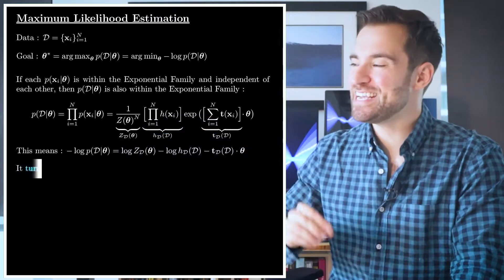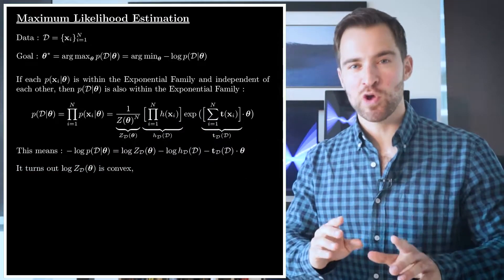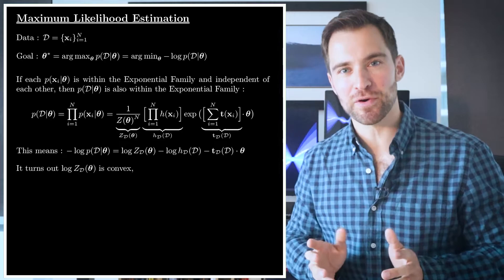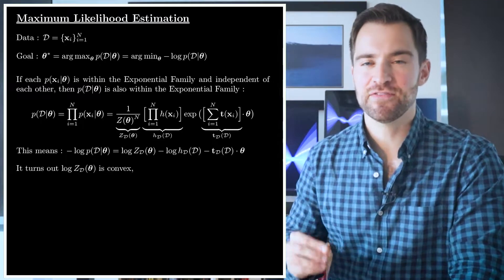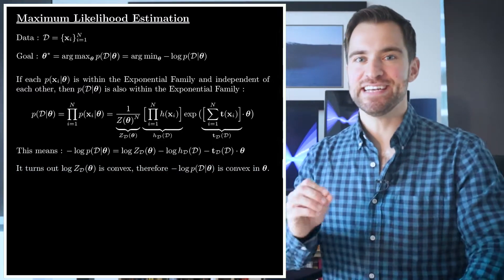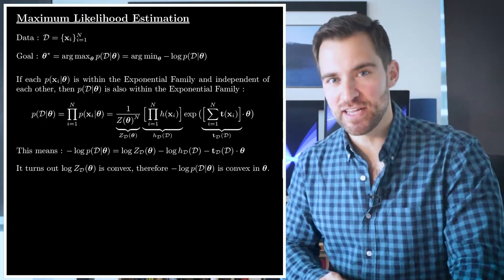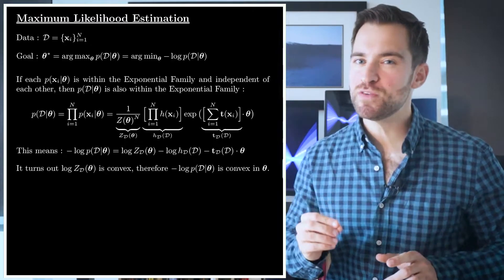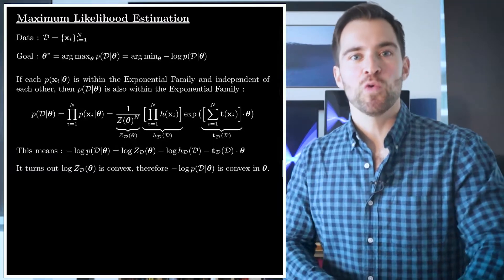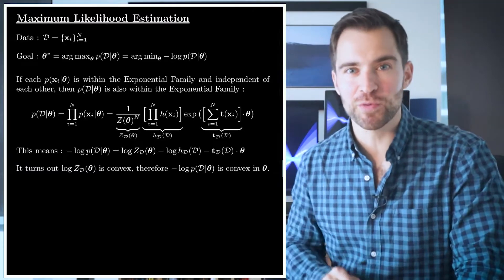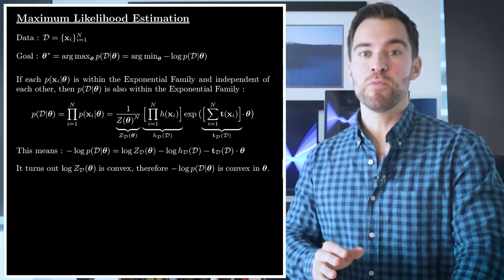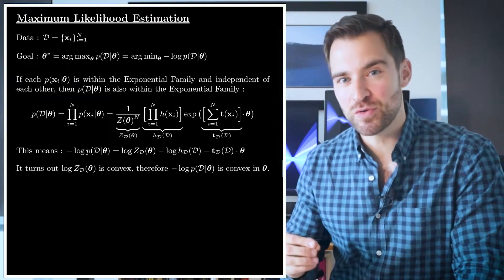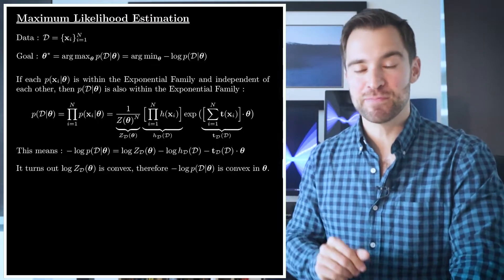If we look at this, we see we have something linear, something which doesn't depend on θ, and the log normalizer, which seems to hold all our complexity. Now, it turns out the log normalizer is a convex function of θ, which means it's shaped something like a bowl. Since the log normalizer is convex, the negative log likelihood is convex, and that's really useful for searching for the MLE.